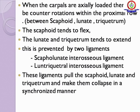This is prevented by two ligaments: the scapholunate interosseous ligament and the lunotriquetral interosseous ligament. These ligaments pull the scaphoid, lunate, and triquetrum and make them collapse in a synchronized manner.